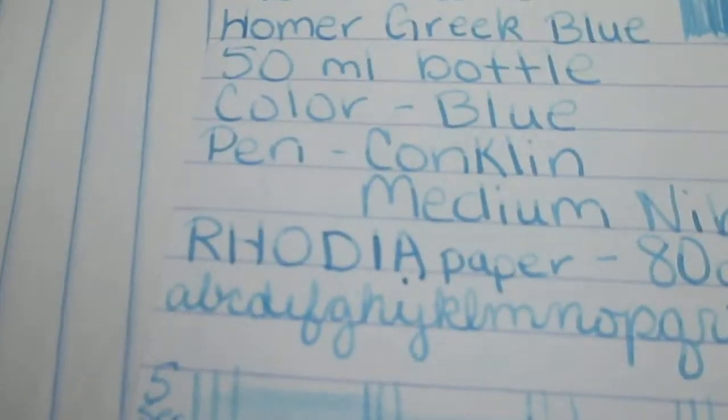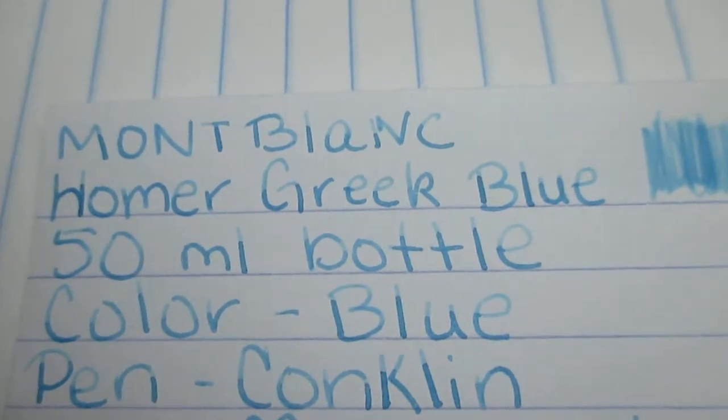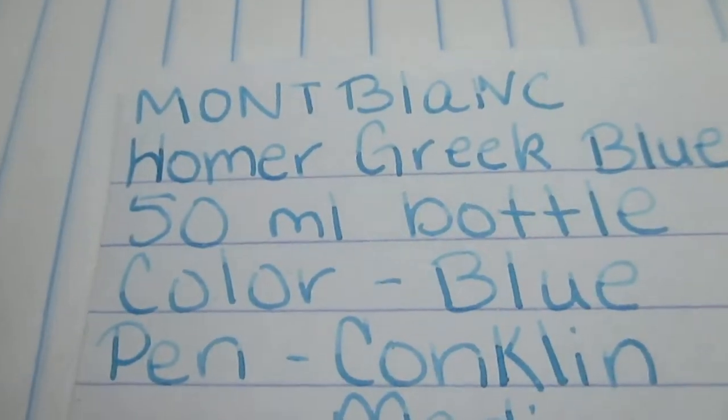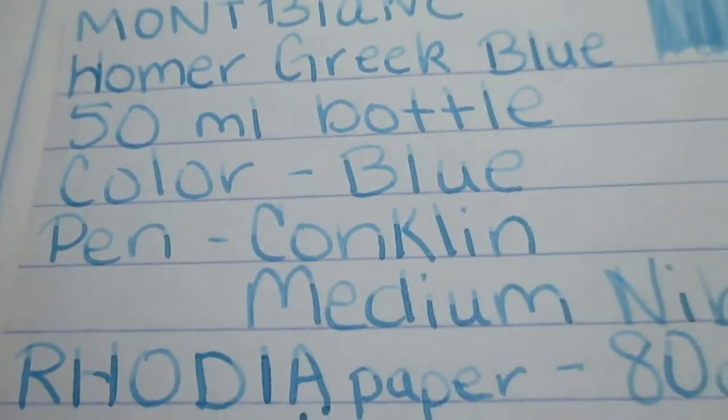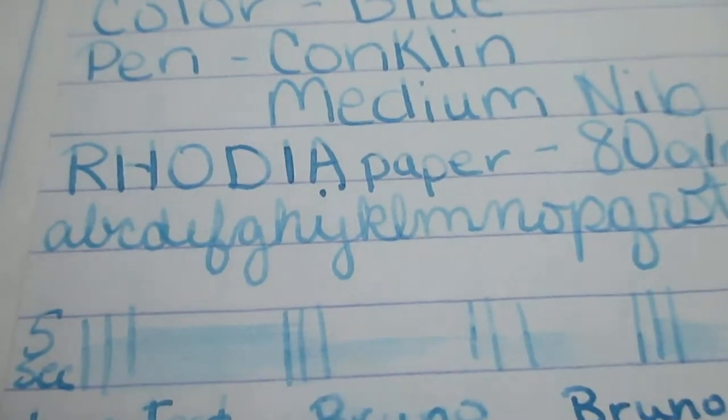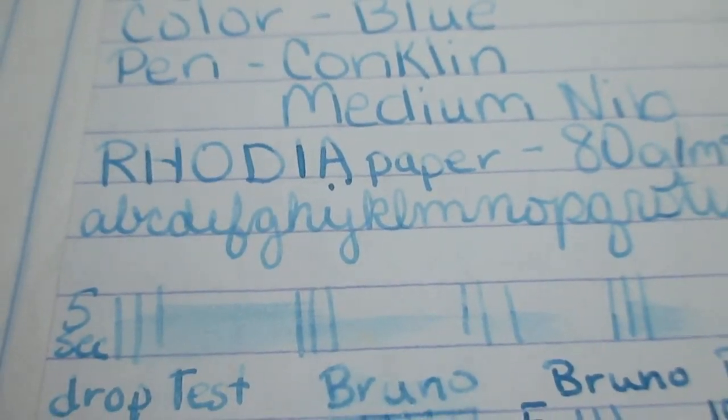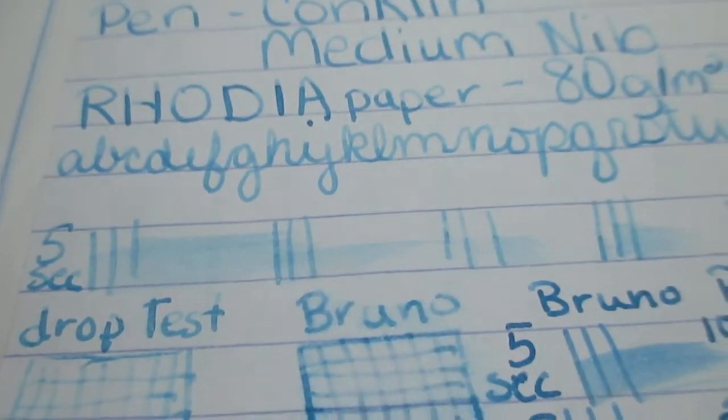Alright here we go, we are off to the races. Let's look at some writing. You can see there it was in the Conklin - Mont Blanc Homer Greek Blue. I did it with the Conklin, my little scrubby. It's a 50 milliliter bottle. The color they're shooting for is a blue. The pen's a Conklin, it's a medium nib of course, the Rhodia paper. Then I did the alphabet. You can just tell it is like shading and just like felt dry and scratchy. It just wasn't working for me.